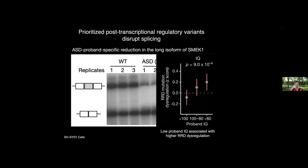When we look in the context of post-transcriptional variants, we can indeed go all the way to phenotype. With regulatory variants it's even harder to go all the way to phenotype because every separate variant has a smaller effect size — it's a combination that really causes the deleterious consequences. But in this case we do have enough power to find a significant association between low proband IQ and higher extent of this post-transcriptional dysregulation in children with autism.